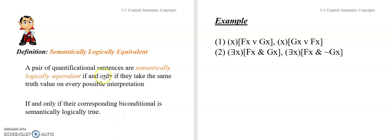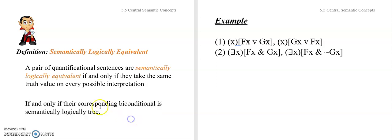Similarly here, a pair of quantificational sentences are semantically logically equivalent if and only if they take the same truth value on every possible interpretation. If they are equivalent, then if one sentence is false on some interpretation, the other will also be false; if one is true, the other will also be true. Alternatively stated, they are equivalent if and only if their corresponding biconditional — the first sentence tri-bar the second sentence — is semantically logically true.